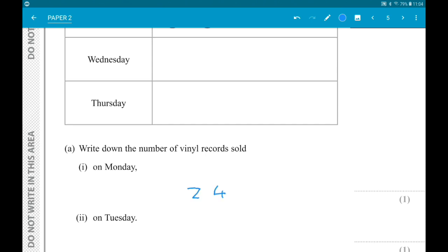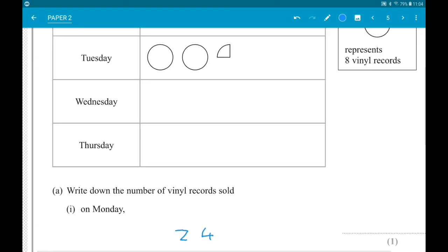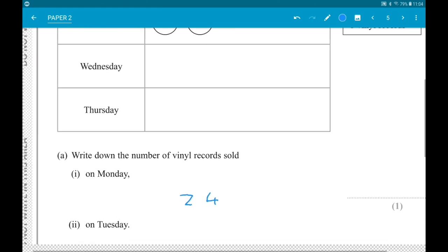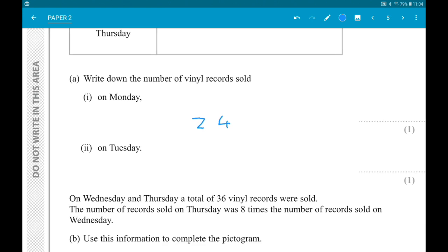On Tuesday, we have two whole records, so that's two times eight. And then the quarter of the record would be two. So it's two times eight add two, which is 18.